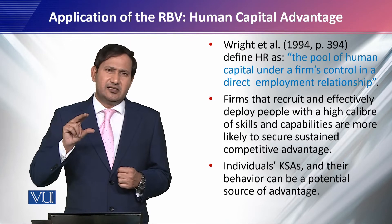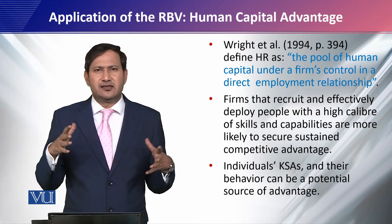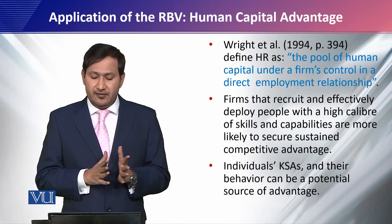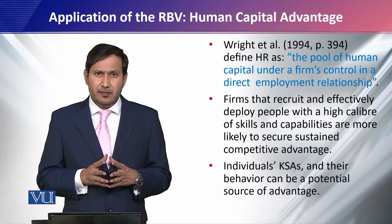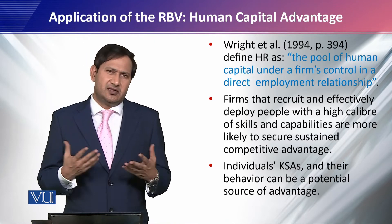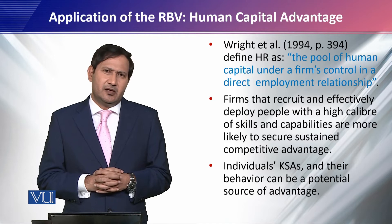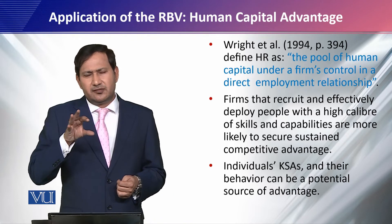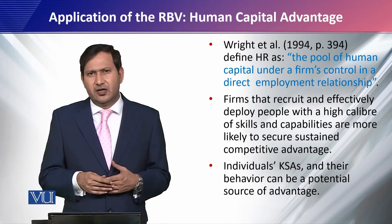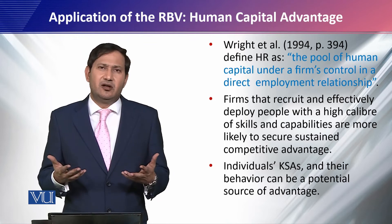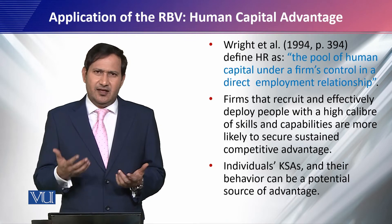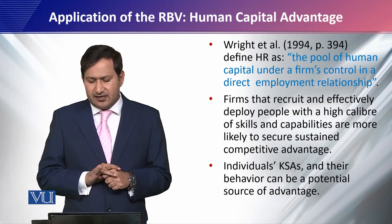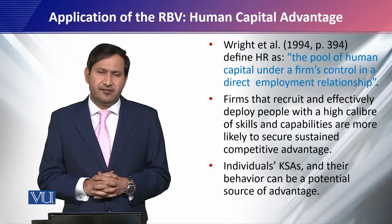As stated, HR is a pool of resources in the direct control of the organization. Firms that recruit and effectively deploy people with a high caliber of skills and capabilities are more likely to secure a sustainable competitive advantage. This is a prescription for organizations: those firms able to secure human capital — people with talent, skills, and knowledge — are more likely to secure a sustainable competitive advantage. Individuals' KSAs — knowledge, skills, and abilities — and their behavior can be a potential source of advantage.